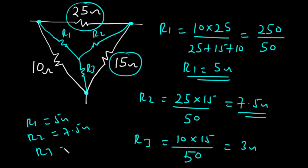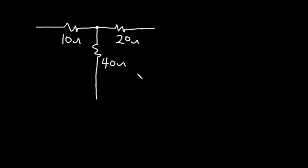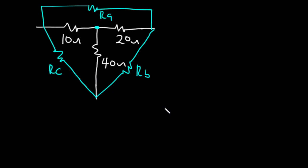This is how to convert a delta network to a star network. Now let's see how to convert from star to delta. This is a star connection because all three resistors have a common connection point. To convert to delta we need to redraw the network to have a delta shape, giving us Ra, Rb, and Rc. Since the resistors are connected end to end we have a delta network, so let's start with the calculation.